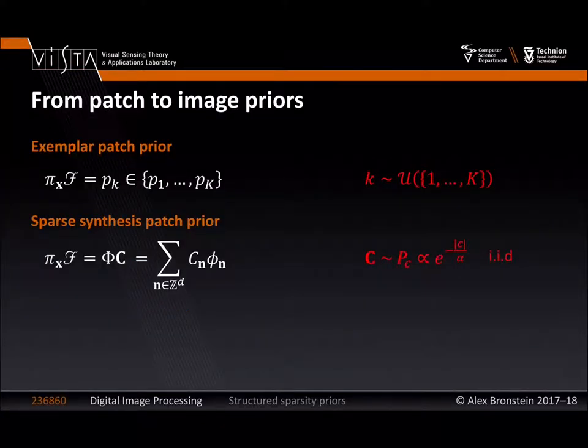We'll just remind you where we stopped last time. We started discussing image priors. Our point of departure was to build a simple prior for patches, because a patch is a small region of an image. We said that building a prior for an entire image is a complicated task, so let's do it for a small region — it's a more doable task. We selected some collection of exemplars or codebook, and our model was vector quantization in this codebook. So a patch is simply one of the patches in a given codebook with a uniformly distributed index, resulting in a very intricate prior on the patch.